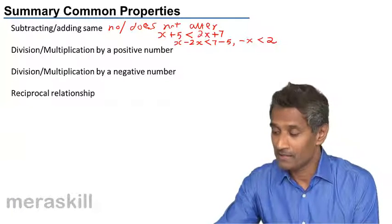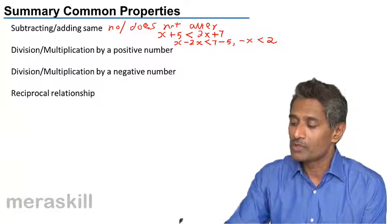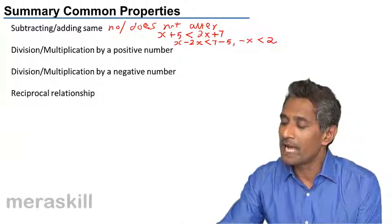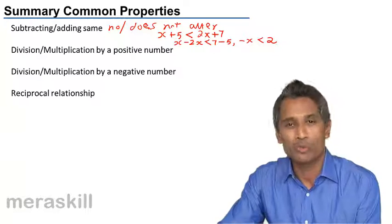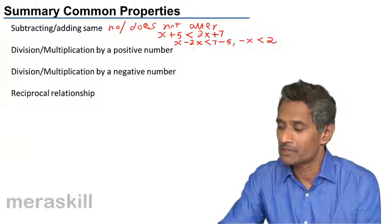So this particular thing you have minus x less than 2. So this is a simple case that when you're adding the same number to both sides, that means you just transposed it this way. Addition or subtraction, the inequality does not change.